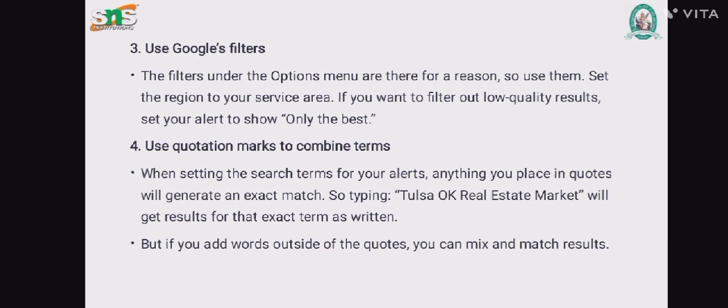Use Google filters. The filters under the Options menu are there for a reason, so use them. Set the region to your service area. If you want to filter out low quality results, set your alert to show only the best. Use quotation marks to combine terms. When setting the search terms for your alert, anything you place in quotes will generate an exact match. For example, typing "Tulsa, Oklahoma real estate market" will get results for that exact term. But if you add words outside of the quotes, you can mix and match results.